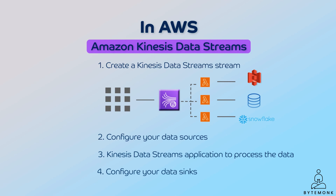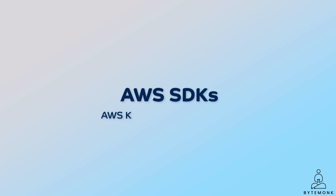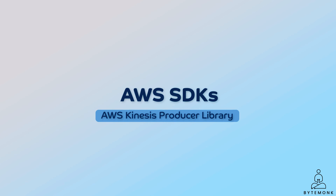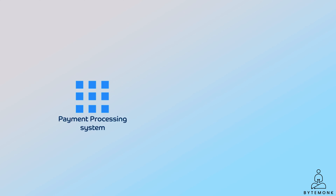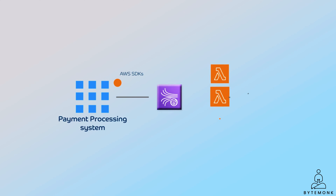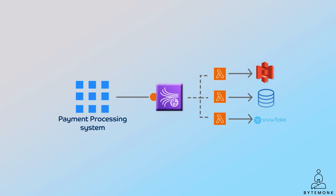Even though using a message broker in conjunction with a stream processor is a common and often highly effective architecture pattern, depending on your use case and requirements, you should also consider directly interfacing with streaming services like Amazon Kinesis — especially if you want a simplified architecture and your use case requires real-time processing. You can publish messages to Amazon Kinesis streams using the AWS SDK or the AWS Kinesis Producer Library. The payment processing system can integrate AWS SDKs into its codebase to interact with Kinesis streams programmatically, make direct API calls via HTTP requests, or even establish a WebSocket connection to publish events in real-time.